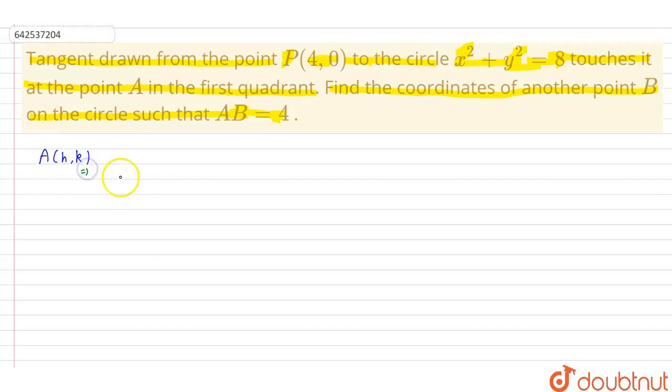we can write the equation of the tangent as hx plus ky is equal to 8. Now, this passes through the point (4, 0). So, putting 4, 0 in this equation, we get 4 into h plus 0 is equal to 8. Therefore, we get h is equal to 2.